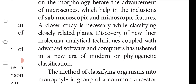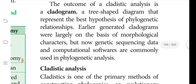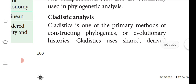Cladistics is the method of classifying organisms into monophyletic groups — single-origin phylogenetic groups — where all members share a common ancestor, known as an apomorphic character. The outcome of cladistic analysis is the cladogram — a tree-shaped diagram representing the best hypothesis of phylogenetic relationships. Earlier cladograms were based largely on morphological characters, but now genetic sequence data and computational software are commonly used in phylogenetic analysis.